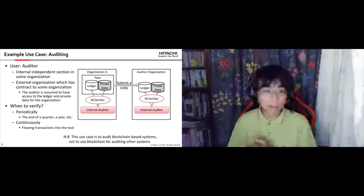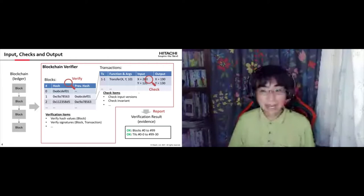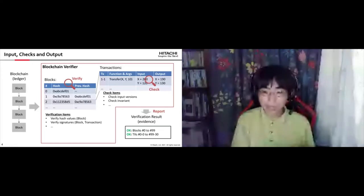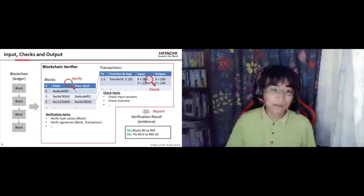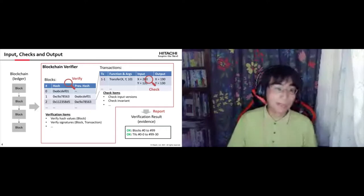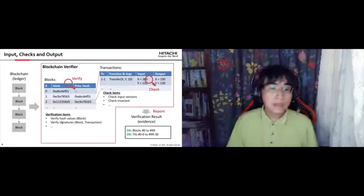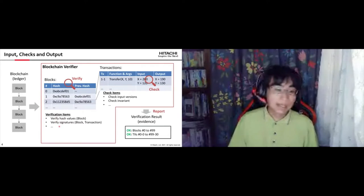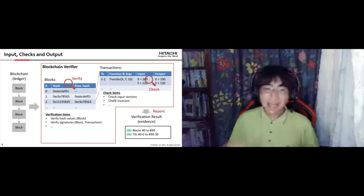This figure shows the input, output, and checks performed by this tool. The input is the blockchain ledger. The output is the verification results or report showing what checks were performed and what the results were. The checks performed in the Blockchain Verifier include ones for blocks — such as hash values and signatures — and ones for transactions, including input versions and invariants inside the transactions.